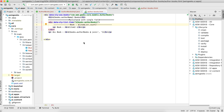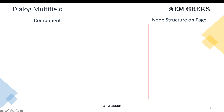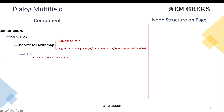Now let's understand the scenario when we have more than one field in a multifield. Suppose I have book name, book subject, and publish year in a multifield. I'll create a multifield with three fields — one for book name, one for book subject, and one for publishing year — and handle them in Java.